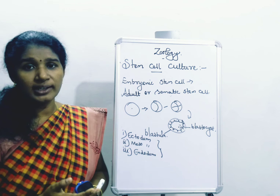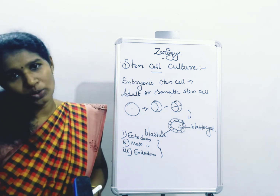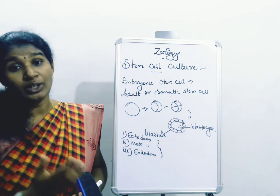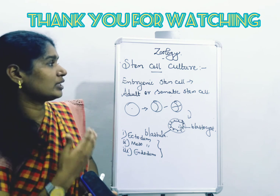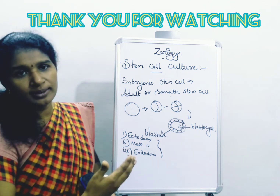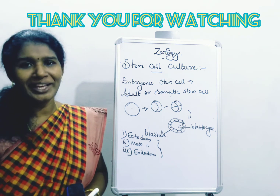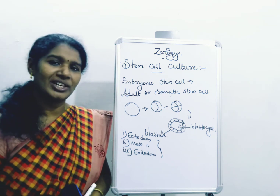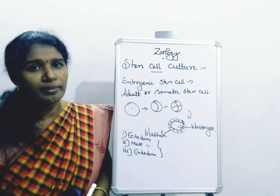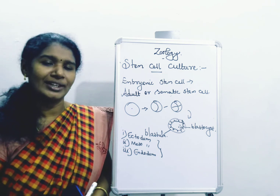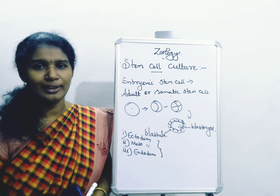The stem cell culture divides by the method of mitosis. Mitosis cell division occurs in stem cell culture. If you like my channel, you can subscribe and click the bell icon to get notifications. Thank you.